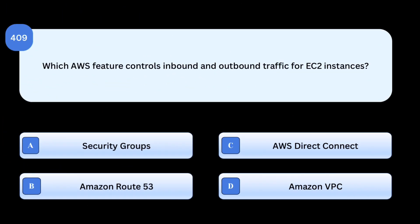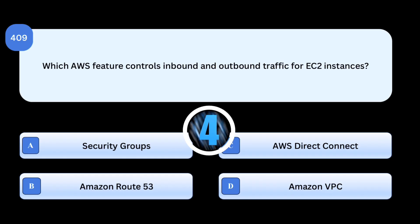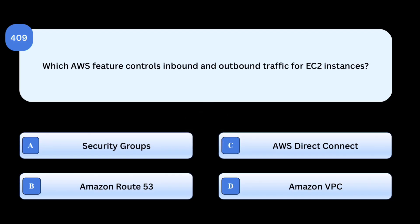Which AWS feature controls inbound and outbound traffic for EC2 instances?